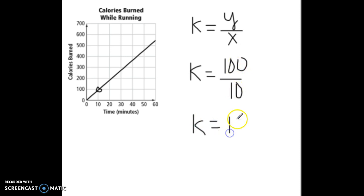But it's not enough just to find the constant of proportionality. We need to know what it means. So let's look at our labels. It's calories burned over minutes. So this is 10 calories burned for every one minute. So the constant of proportionality is really just a unit rate. And later on in algebra, you'll also know it as the slope of a line.